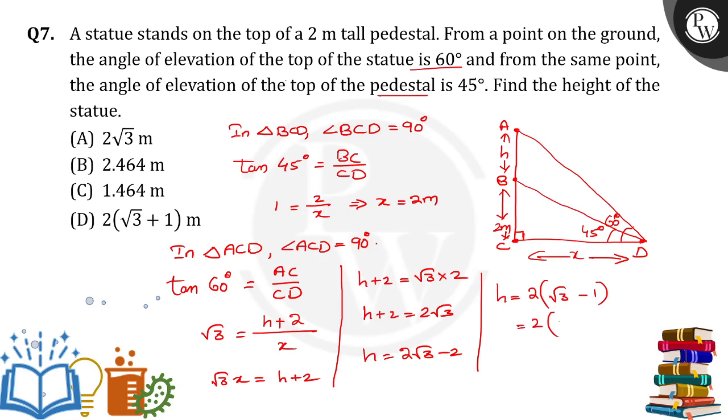So 2 into root 3 is how much? 1.732 minus 1. So 2 into 0.732 will come. So 2 into 0.732 is 1.464 meters. So this is the height of the statue. Option C is the right answer. Thank you.